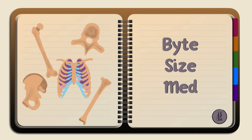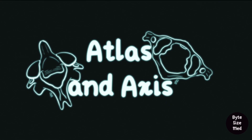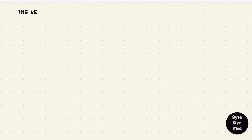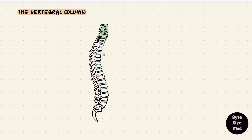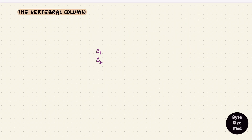Hello, welcome to Bite Size Med. This video is on atlas and axis. The vertebral column includes around 33 vertebrae divided into regions. The first seven vertebrae are the cervical vertebrae, C1 to C7. C1 and C2 are special because they are right beneath the cranium — that's the head. C1 is atlas and C2 is axis.